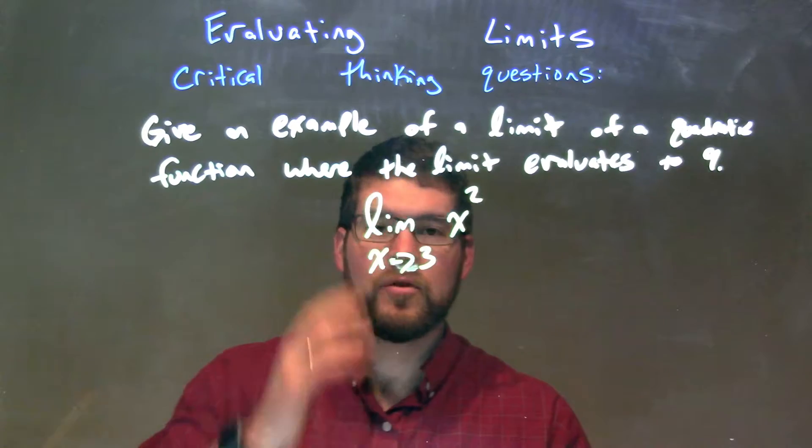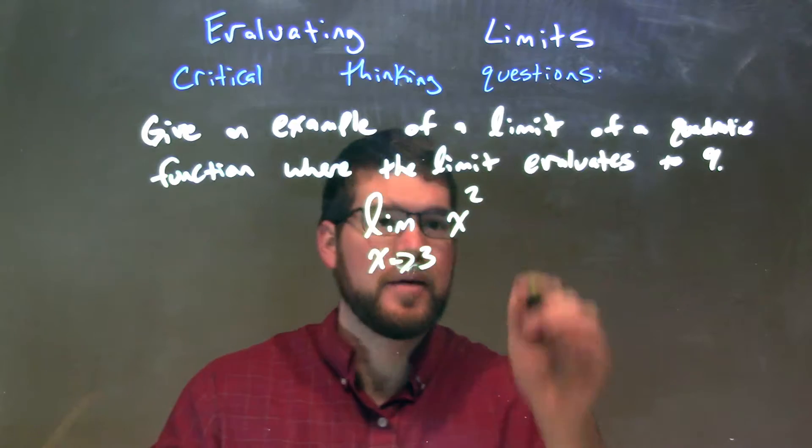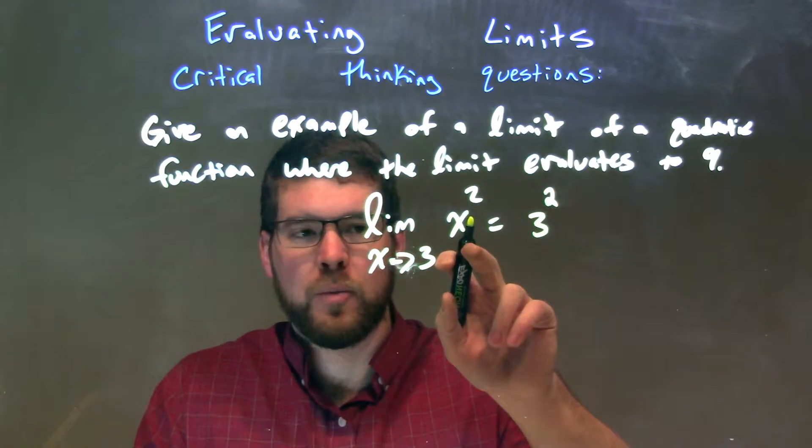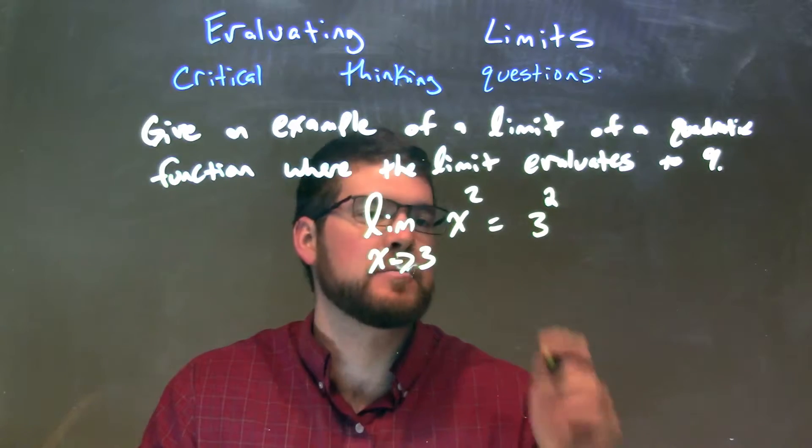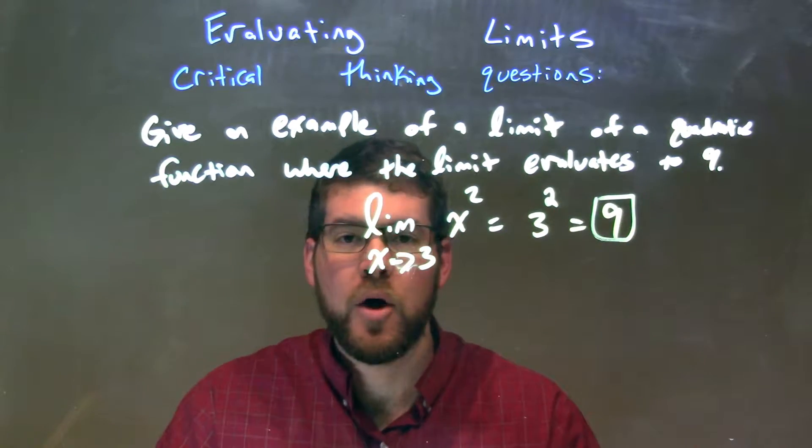This one's fairly simple because we can plug directly 3 in for x. By doing that, 3 squared, because it's a polynomial and we can plug it in wherever it exists, 3 squared is just 9. There we go, pretty straightforward.